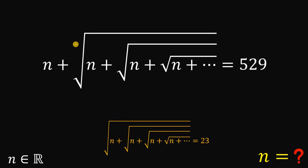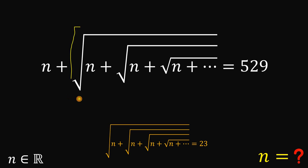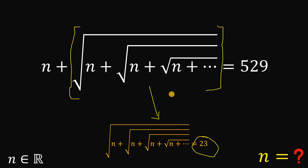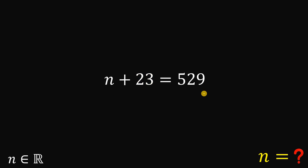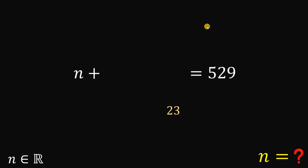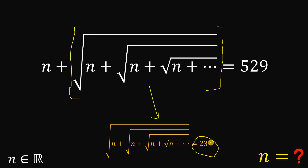Now let's look at the original equation. Take note that square root of n plus square root of n plus square root of n until infinity — we said earlier that this is equal to 23. Therefore we can replace this portion with 23.